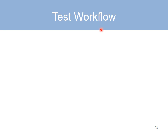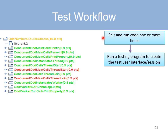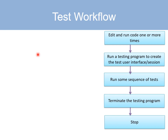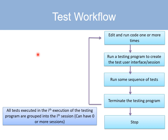To interpret our test results, we need to understand the test workflow supported by the system. A programmer can edit and run their code one or more times. At some point they are ready to test, so they run a special testing program that creates a user interface allowing them to click on a test to see its results. They can run some sequence of tests, terminate the program, and then stop if satisfied or go through this process one more time. The tests executed in the ith execution of the testing program are grouped into the ith session. You can have zero sessions — simply edit the code, run it a few times, and stop without giving us any test data — or go through this process once or multiple times.